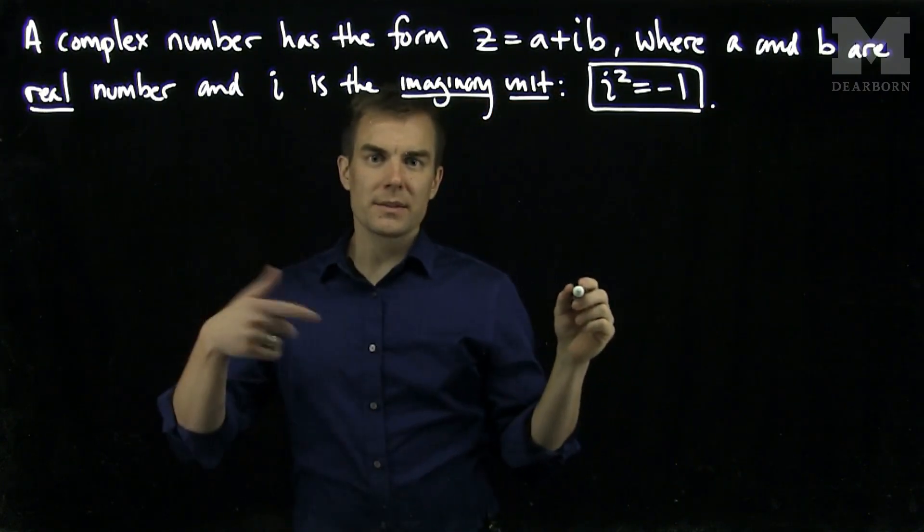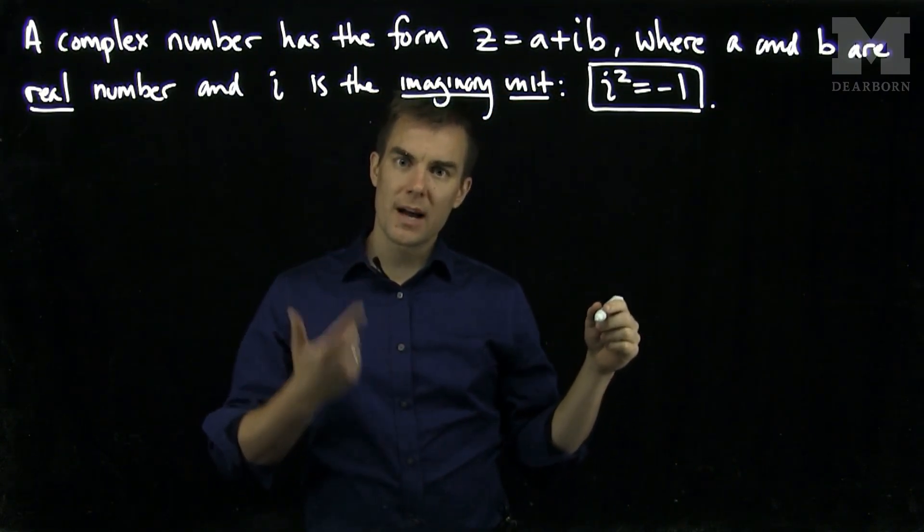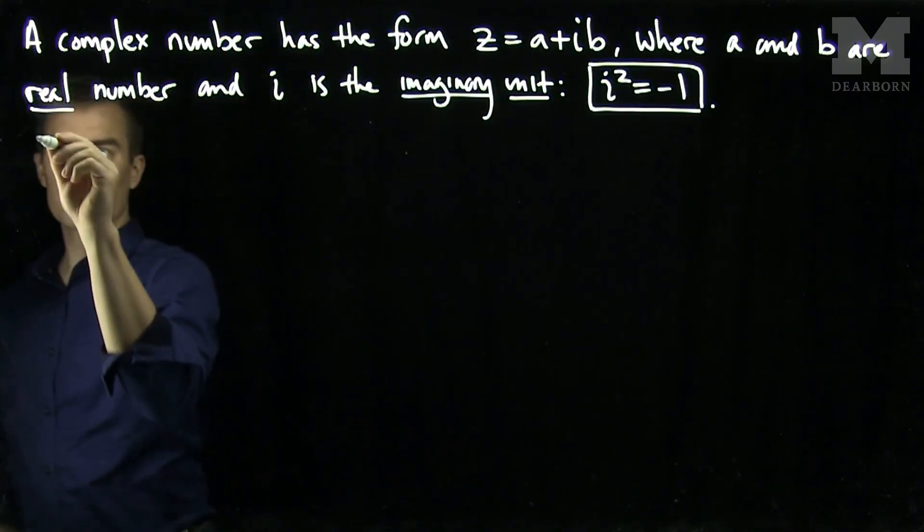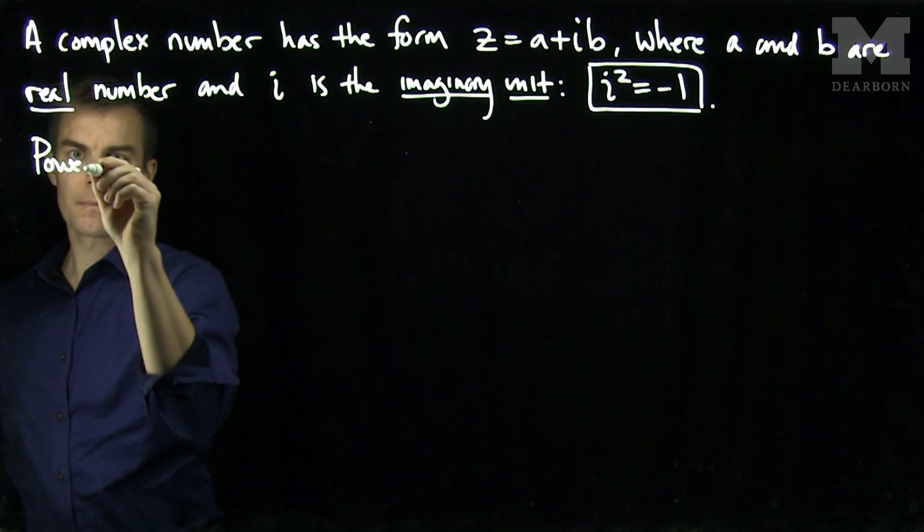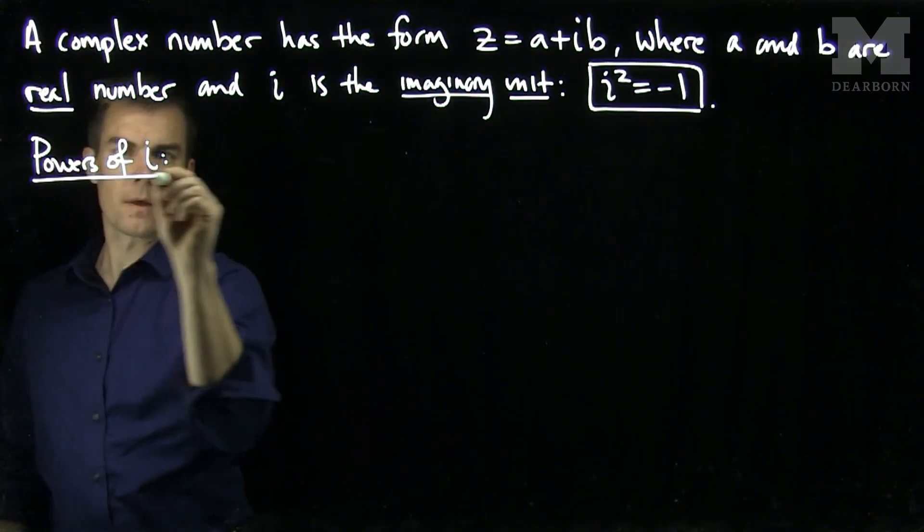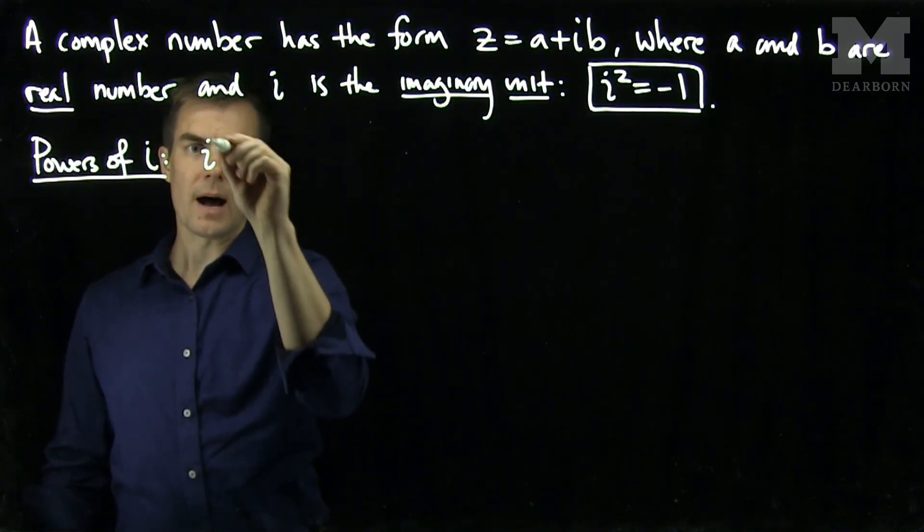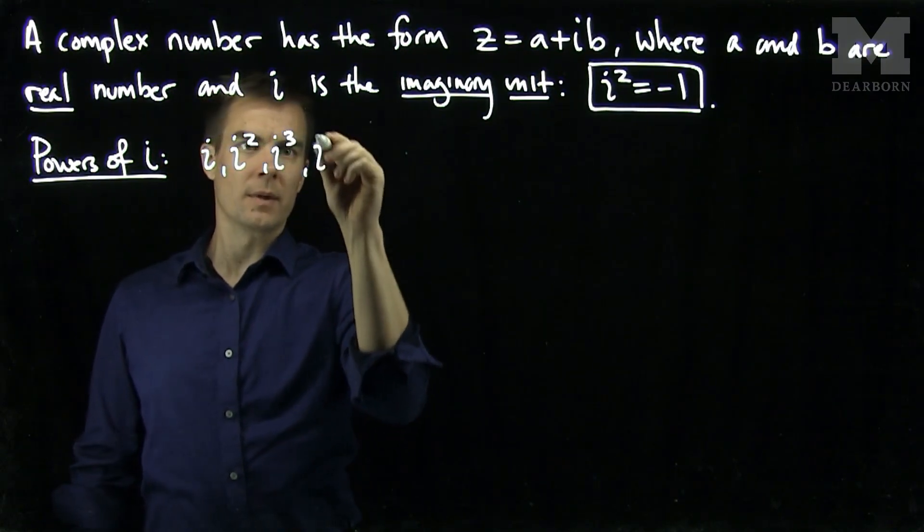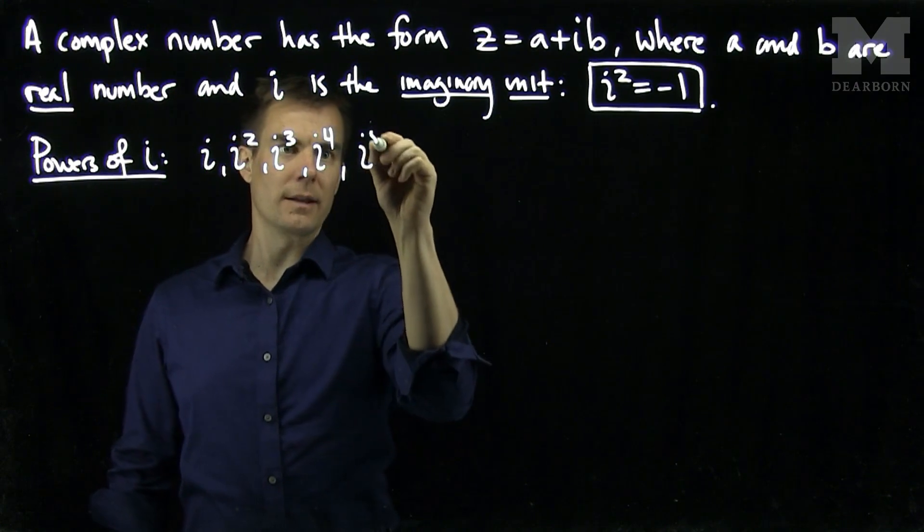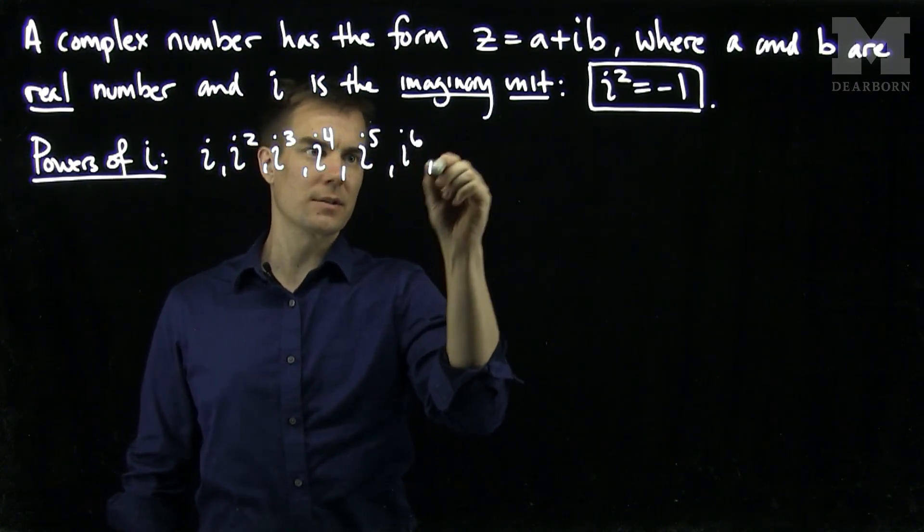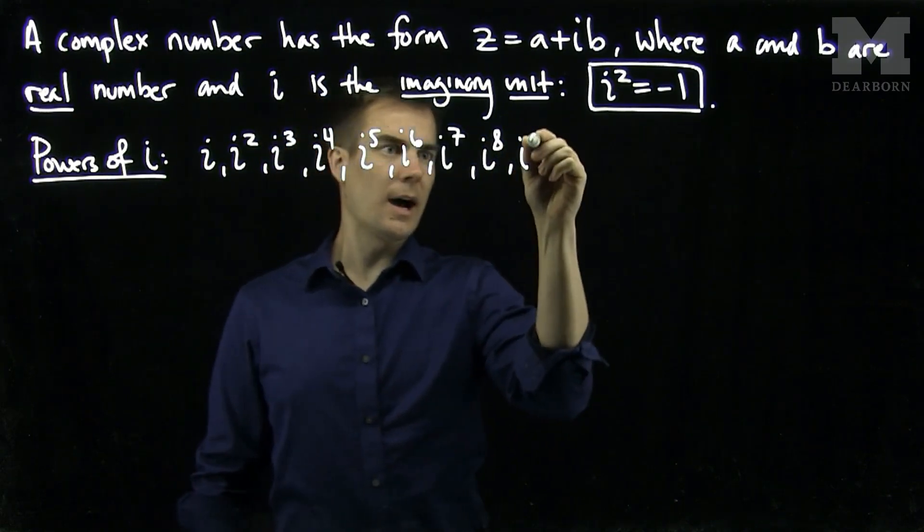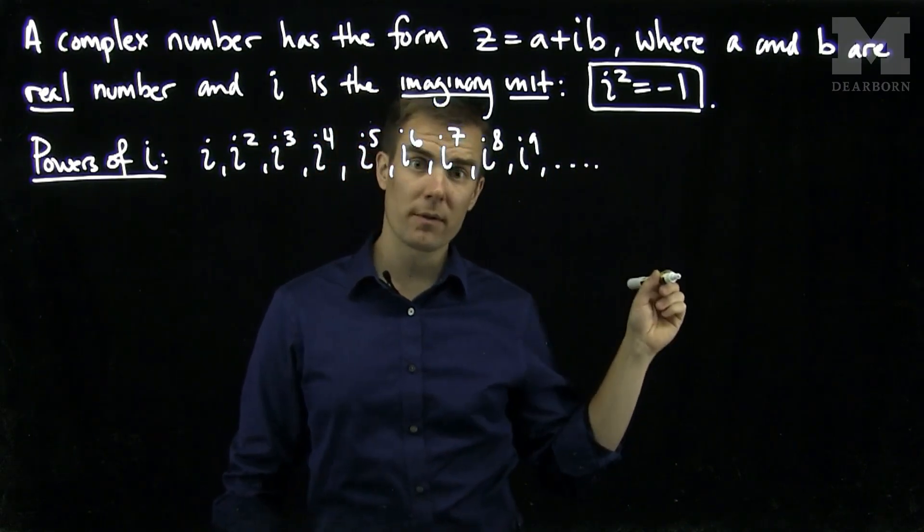Now, let's see what happens when I multiply this complex unit i by itself over and over again. So let's consider the powers of i. The powers of i will be i, i squared, i cubed, i to the fourth, i to the fifth, i to the sixth, i to the seventh, i to the eighth, i to the ninth, and so on forever.